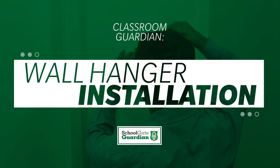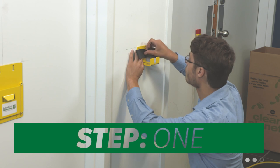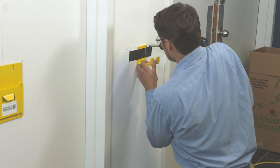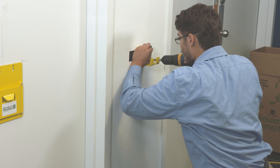Wall Hanger Installation - Step 1. Place the flat side of the wall hanger against the wall and use four screws to install the wall hanger into a secure anchor inside the wall.